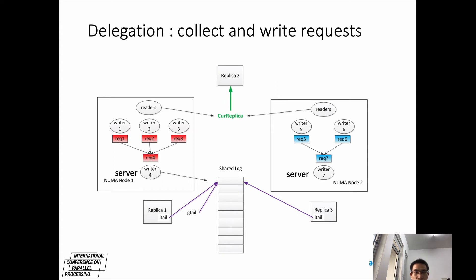Let's see the first step: delegation. In NUMA node 1, writer 4 is the server, and writer 1, writer 2, and writer 3 are clients. The server gets exclusive access to replica 1 to execute update operations. They first publish their requests with update operations, and then the server collects these requests. Finally, the server allocates free entries from the shared log and writes these requests into the entries.